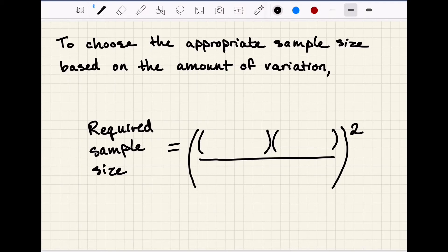And now we have to bring this all back to the amount of variation within the area that we're sampling. So the equation for that looks like required sample size equals the z-score times the standard deviation all over the margin of error, all squared.